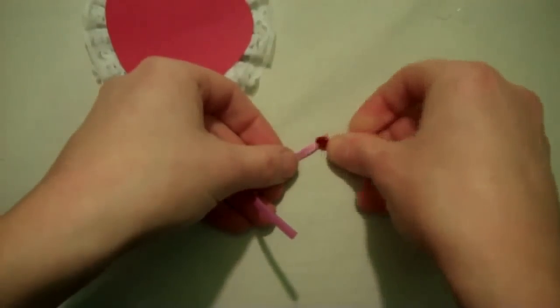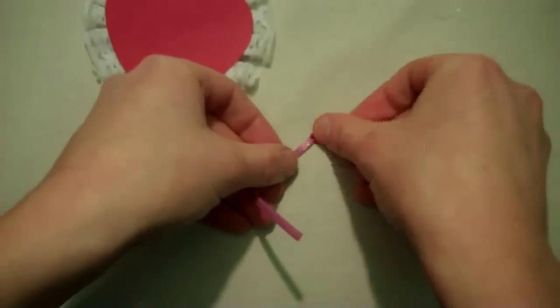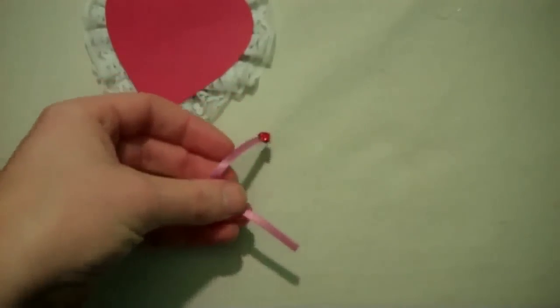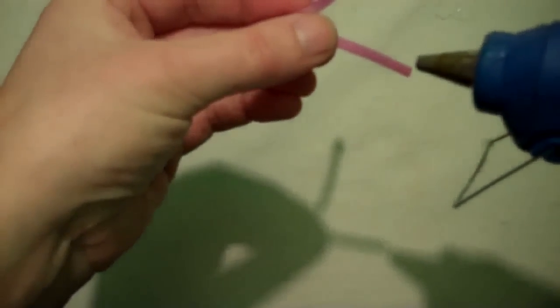Place a small drop of hot glue on each edge of the ribbon and stick a small red heart-shaped bead to each end.